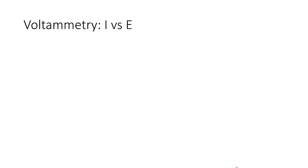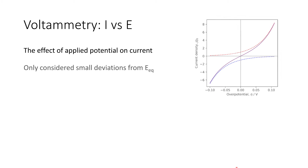Voltammetry looks at the effect of current as we vary the cell potential — we apply a cell potential and measure the current which comes through. So far, we've really only considered small deviations from an equilibrium cell potential, with very small overpotentials, in the region where we can measure kinetics using Butler-Volmer relationships.